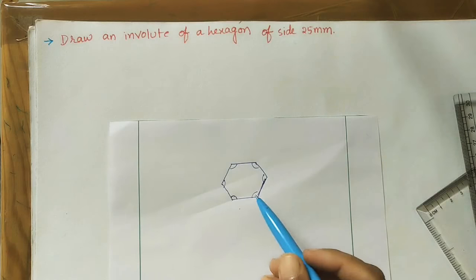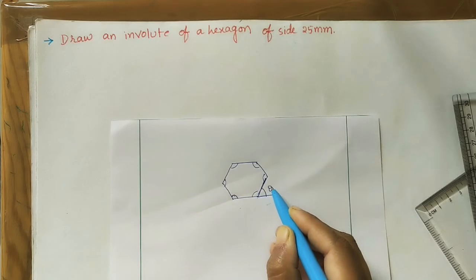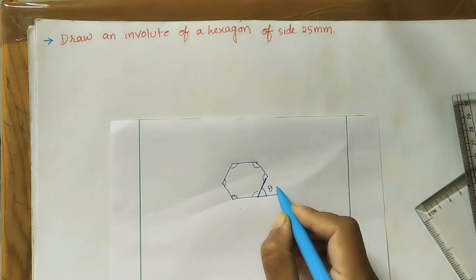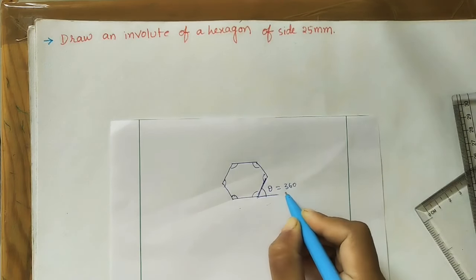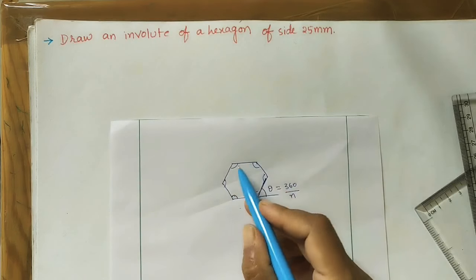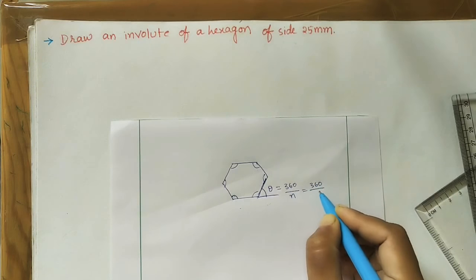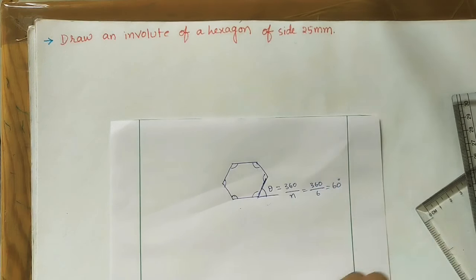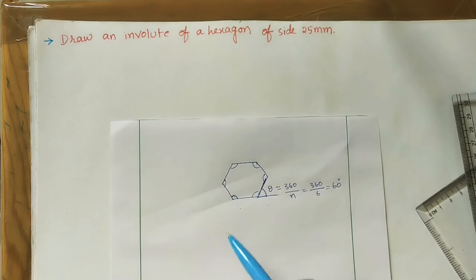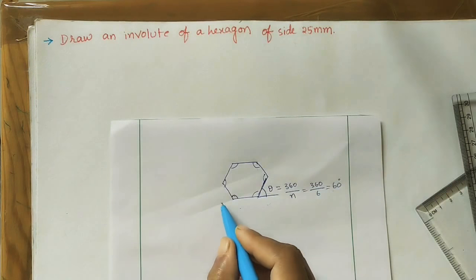For doing the involute of a hexagon, we need to first construct the hexagon. I am using the outer angle formula. Let this outer angle be theta. The formula for any polygon is 360 divided by n, where n is the number of sides. In our case, n equals 6, so 360 divided by 6 gives each outer angle as 60 degrees.